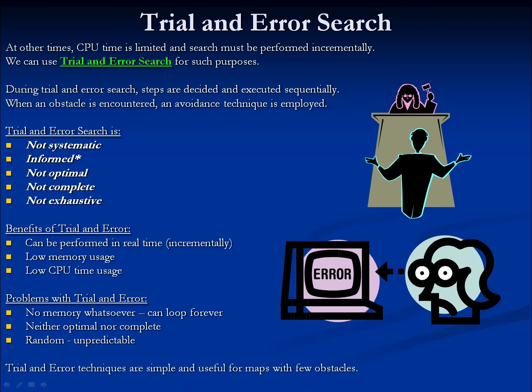The real use case for trial and error searches is: first, do we just not have the CPU time to do a full path plan? And does our search space have fairly few obstacles? If there are too many walls, trial and error is probably just not going to find a good solution or find a way to our goal.